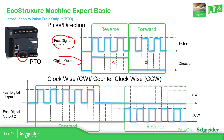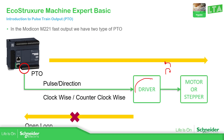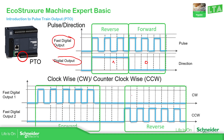Comparing this to the clockwise/counter-clockwise configuration: you can see in the graph that we have fast digital output one and fast digital output two. Depending on which fast output carries the pulses, the driver will understand whether to go forward or reverse. One disadvantage compared to pulse-direction is that here we need to use two digital outputs instead of one, so we are limited by the amount of PTO outputs available on the controller.